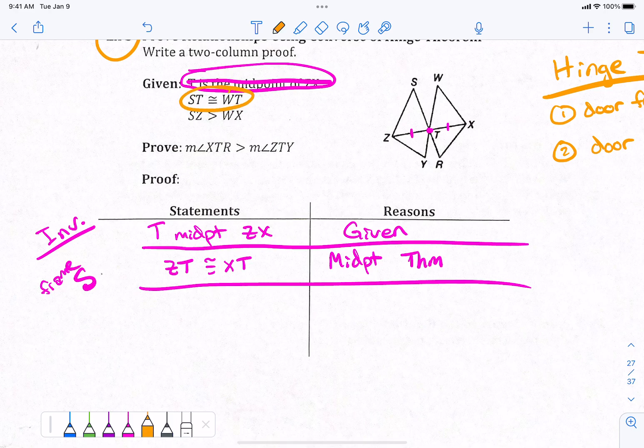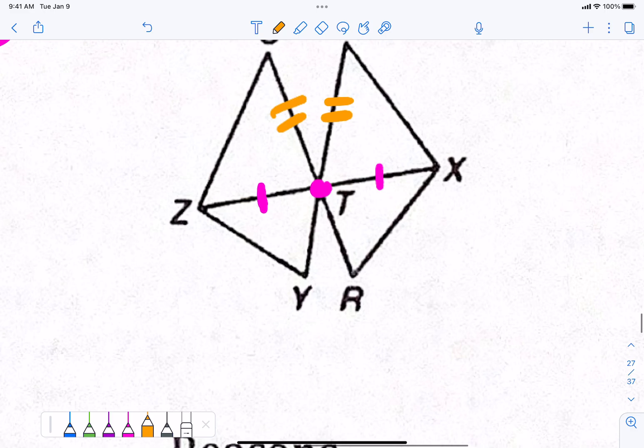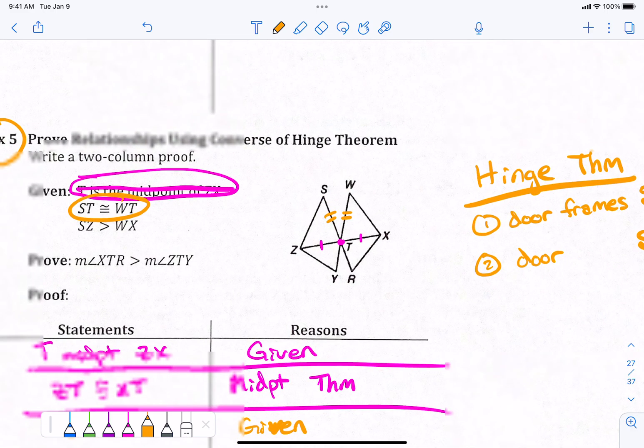This one says ST and WT are the same. I'm going to write that down. ST is congruent to WT. That's given to me. Given. ST and WT. These are my doors that are hinging open. Right? My doors that are hinging open. From there.